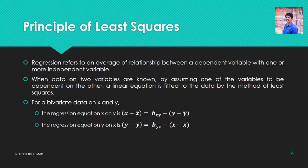Normally, regression is estimated by two methods. One is the regression line method, also called the algebraic method. Another is the least square method. Let us discuss the principle of least squares. When data on two variables are known, by assuming one of the variables to depend on the other, a linear equation is fitted to the data. That method is called the method of least squares, and that linear equation is called the regression equation.